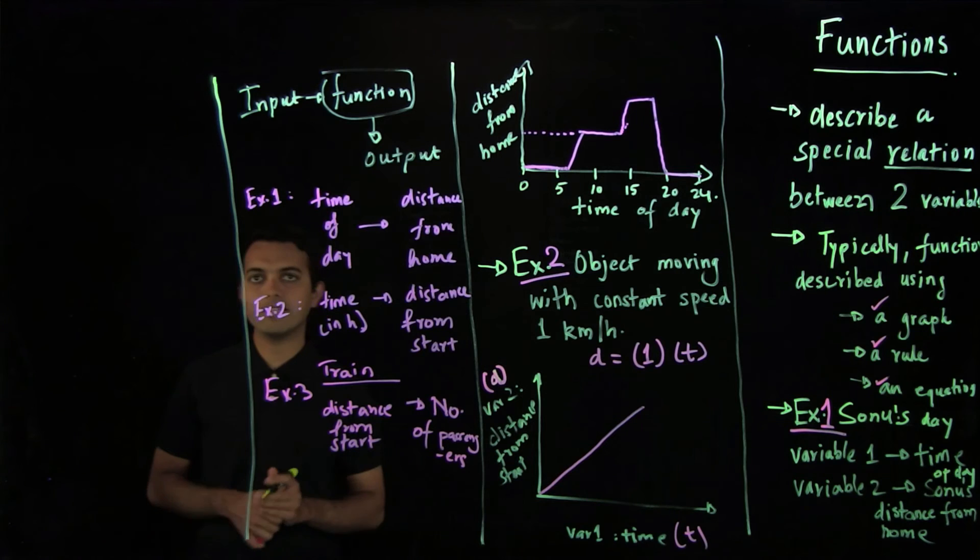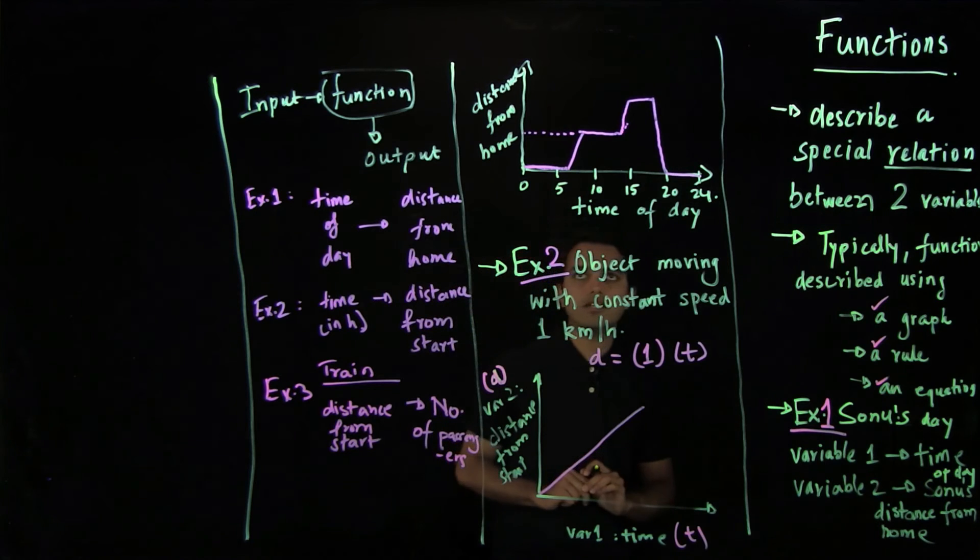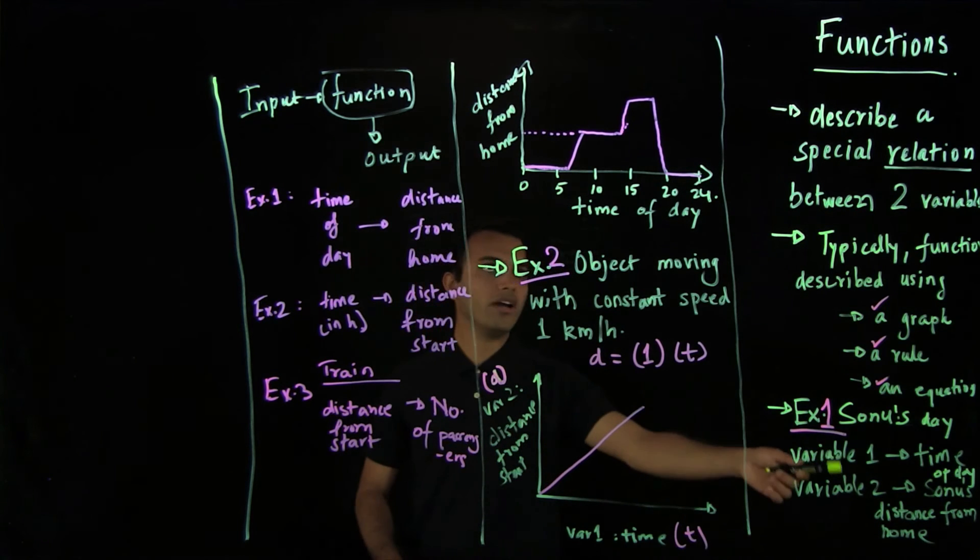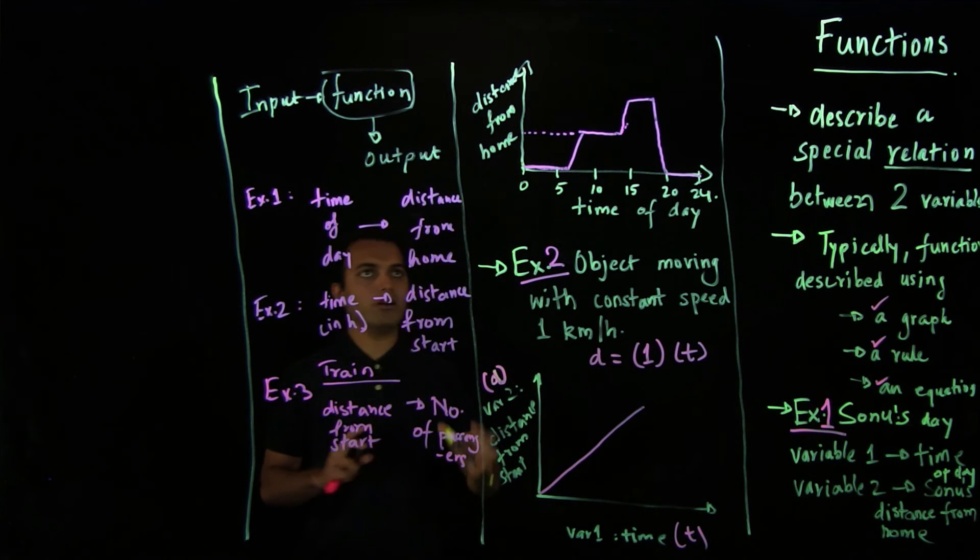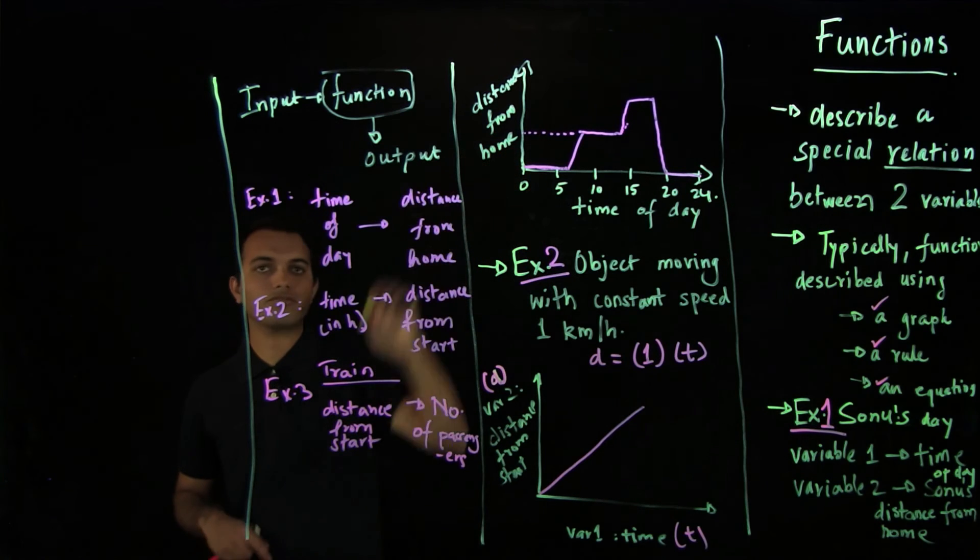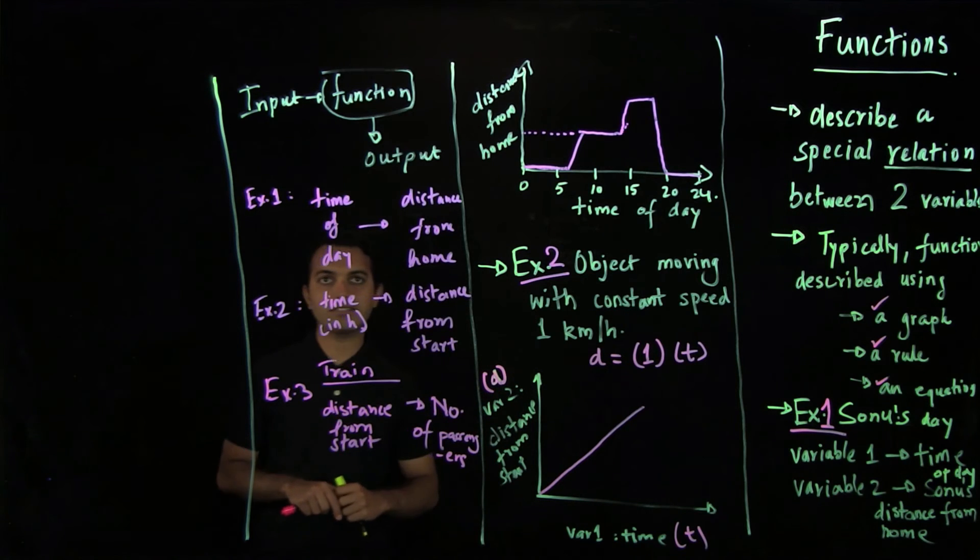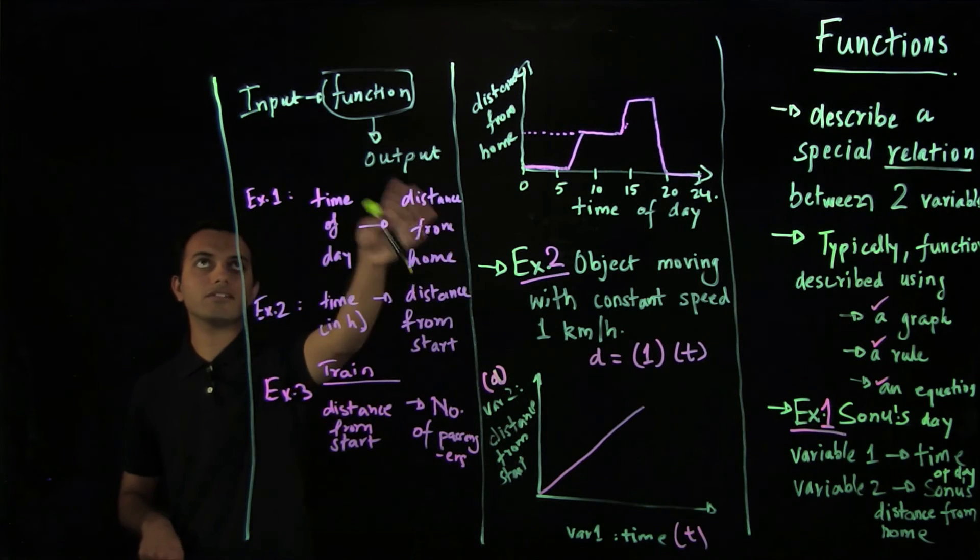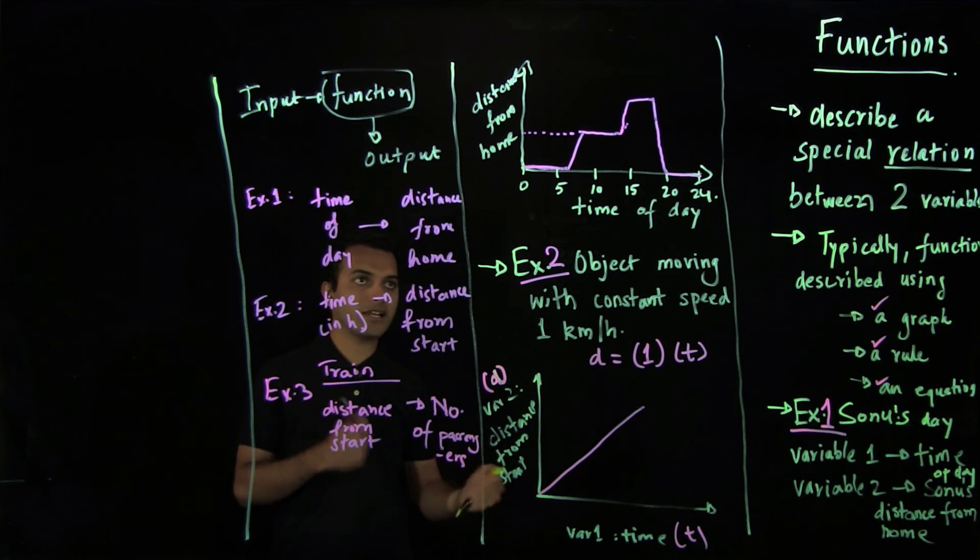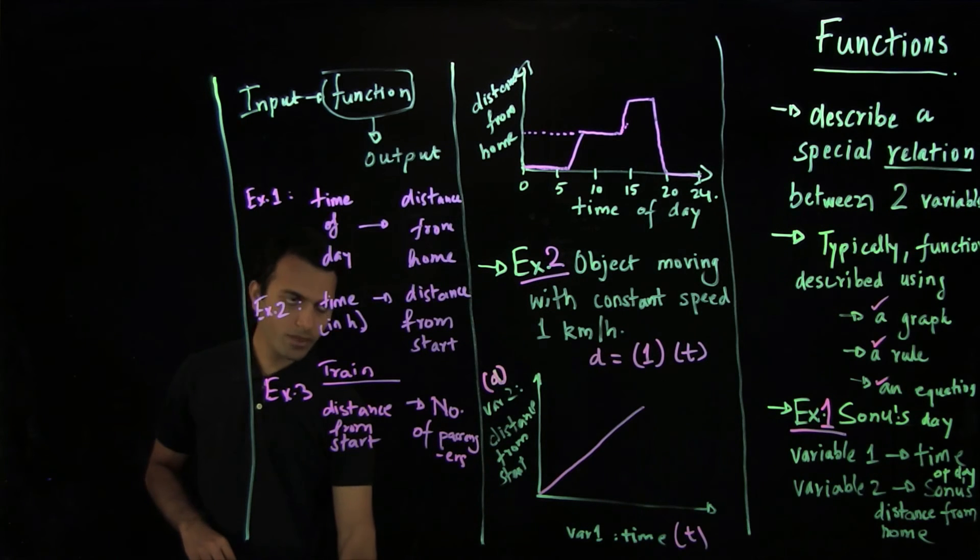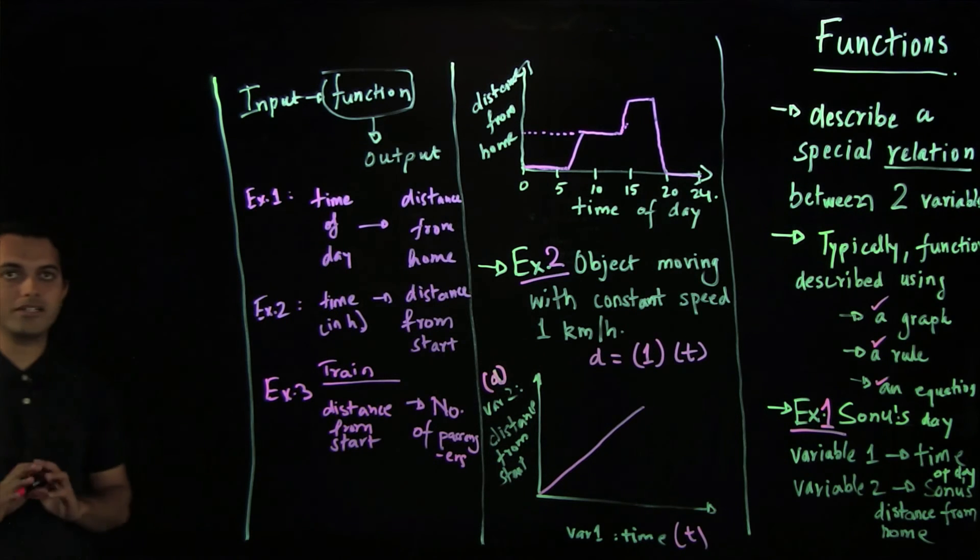Take some time to think about examples of functions. And also one thing that is very important to see here is what makes variable one go on the x-axis and variable two go on the y-axis. Is it possible to flip time and distance from home in this graph? Think about why variable one is on x-axis and variable two is on y-axis. One way to think is variable one is sort of input and variable two is output, but there are other reasons as we'll see as we go ahead.